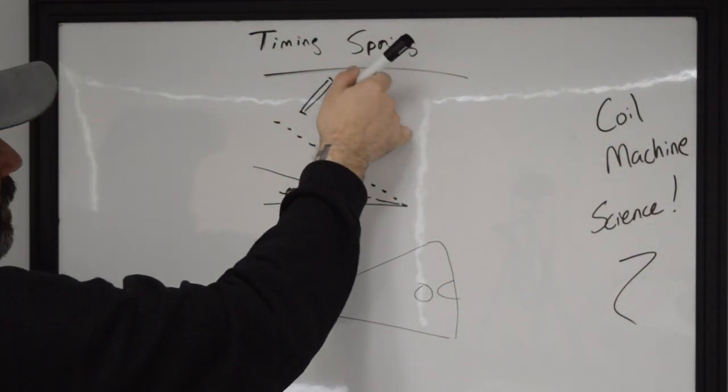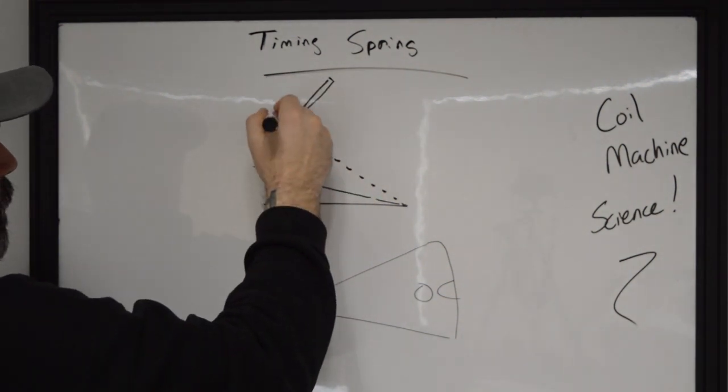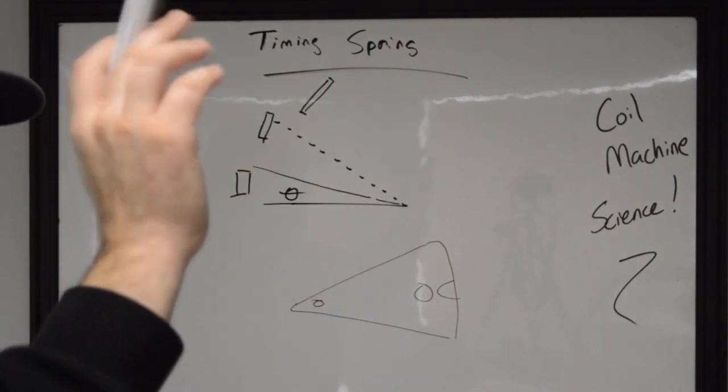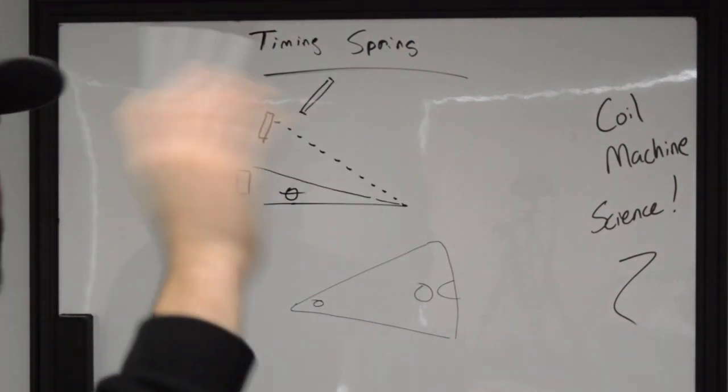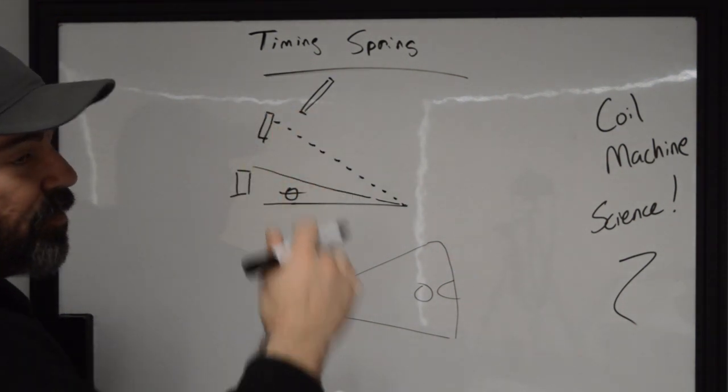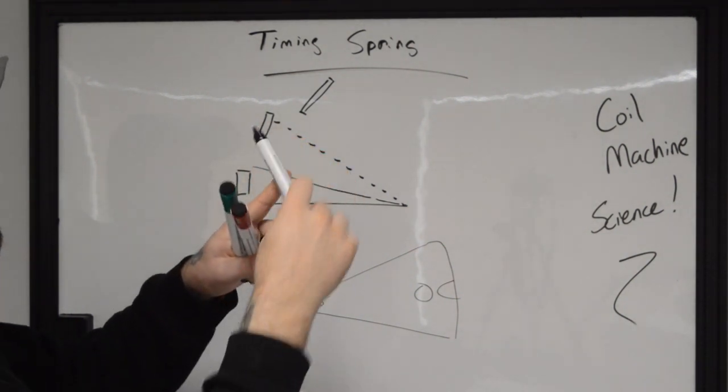The more that this contact is either going to have to turn or adjust to meet, each one of these is going to have a different value of that actual deflection, the amount of force that it's able to impart back on it. The straighter that the contact is in relation to that timing spring, the quicker that it should run, because there's actually going to be less flex and deflection coming off of it.